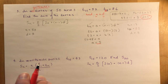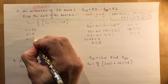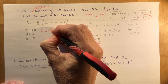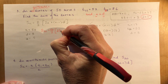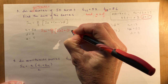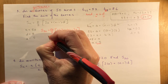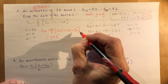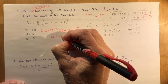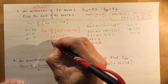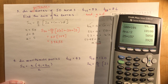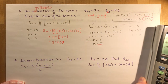Now I have a equals 5, and I have everything I need to solve the sum. The sum of 50 terms is 50 over 2 times 2 times 5 plus 50 minus 1 times 3, which simplifies to 25 times 157, giving 3925.